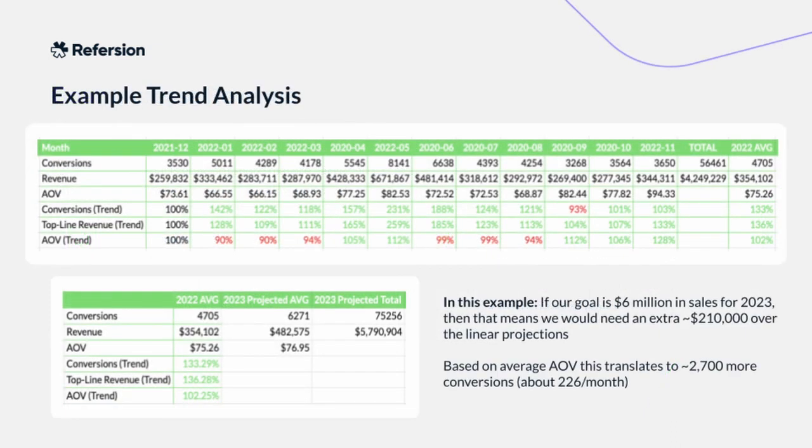If your goal is increasing revenue, then you need to start looking pretty hard at your sales numbers. You need to understand your top-line revenue, your average order value, and your trend analysis. You need to understand clearly where you are now and what you need to do to achieve your goal — you need to let the numbers drive your strategy. In this chart, which was pulled using real merchant data, we're seeing a merchant's monthly number of conversions, revenue, and average order value, as well as a month-over-month trend analysis.